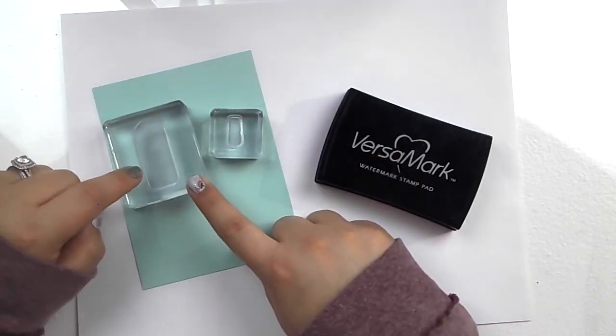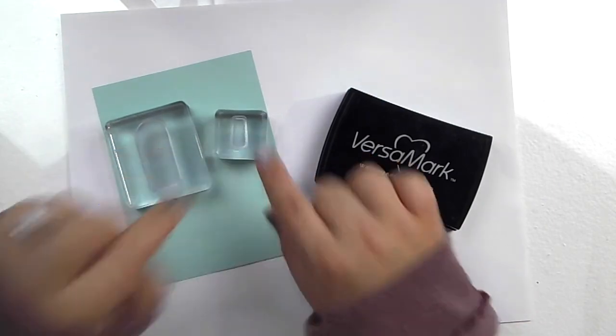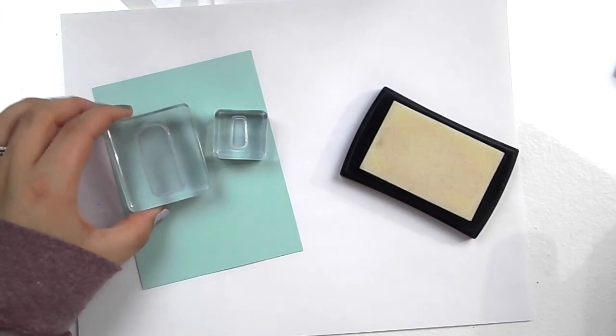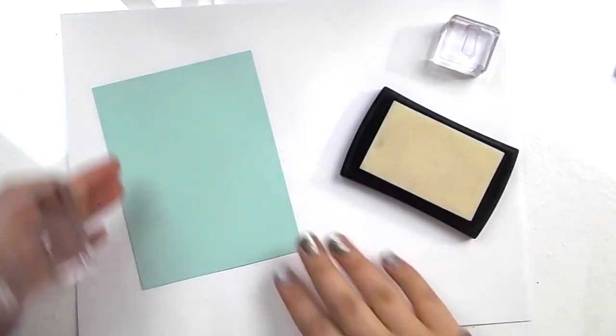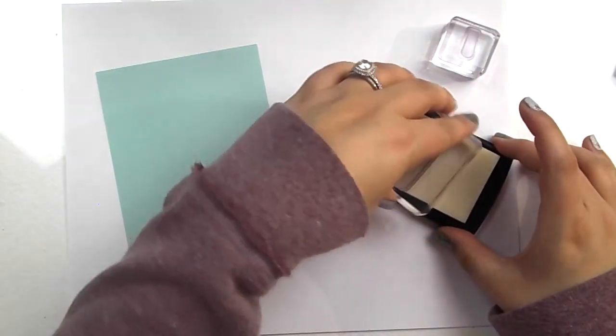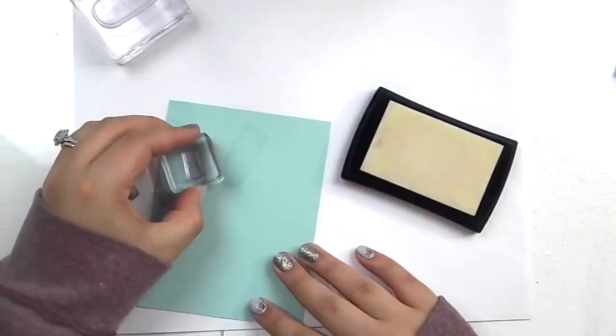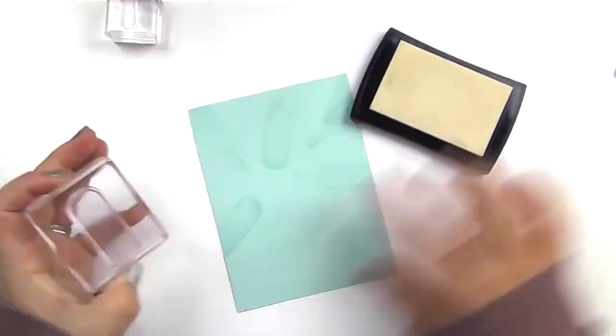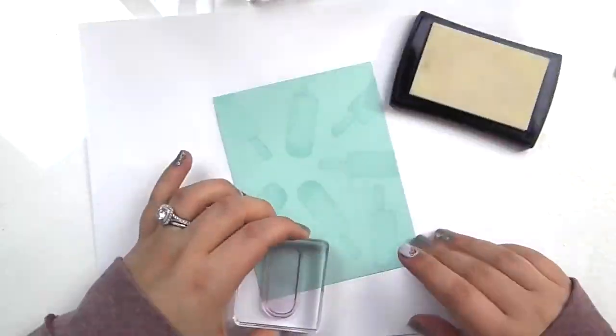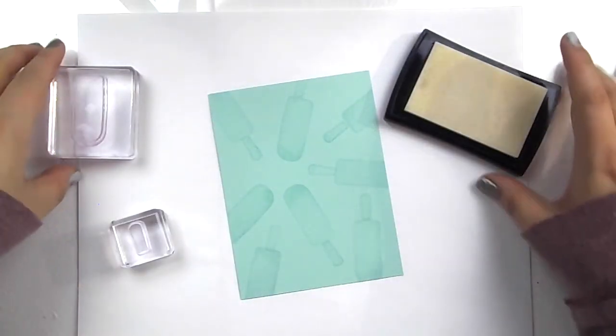So it's this like tall, long popsicle and then the little stick that goes with it. So I'm just going to take these two stamps and I'm going to take my Versamark and I'm going to stamp all over this background piece. So there's that. It doesn't need to be perfect.